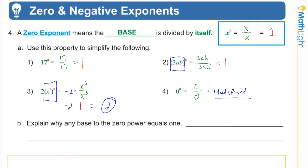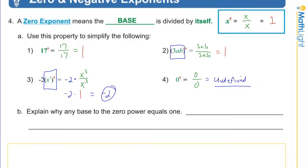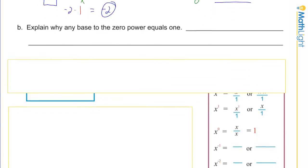Okay, so hopefully you're back and maybe you wrote something like this: when you have a base to a zero power, it means to divide the base by itself and the end result is one. Or you might have said any base divided by itself is one, or any exponent of the zero power results in one because it's the base divided by itself, something to that effect. Okay, all right, let's get to our next topic.